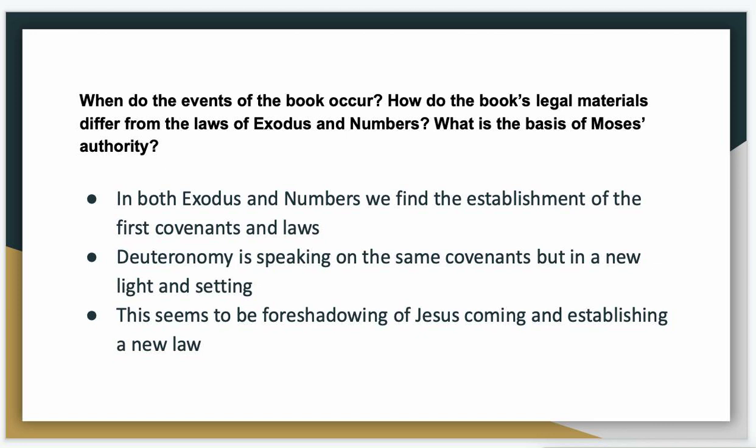Continuing on, in both Exodus and Numbers, we find the establishment of the first covenants and laws — the original copies of these laws and covenants that God gave his people. Deuteronomy is speaking on the same covenants and the same laws, but in a new light and a new setting. This was right before Moses was about to set his people free into the Promised Land, so he's going back, reestablishing what these laws said and what they meant to the people.